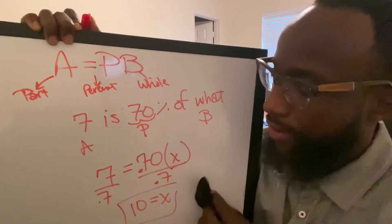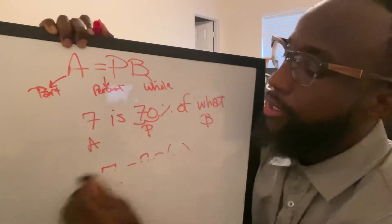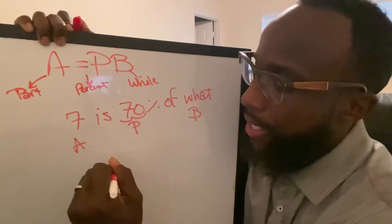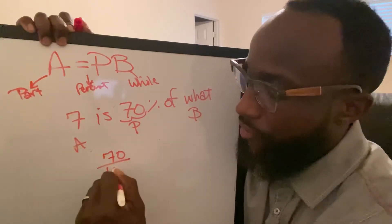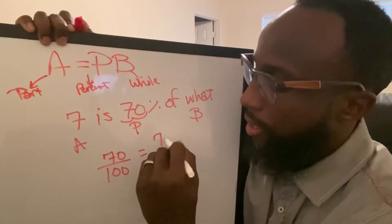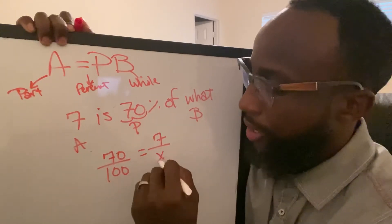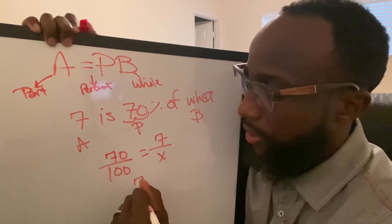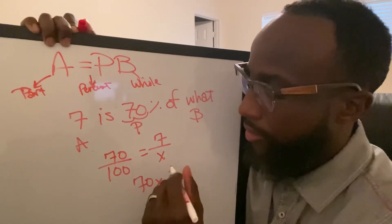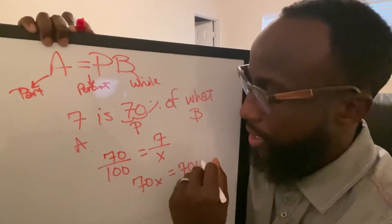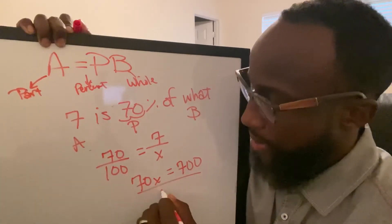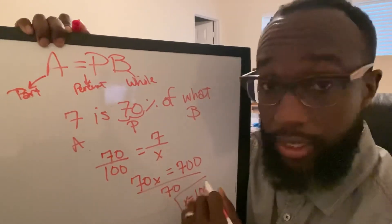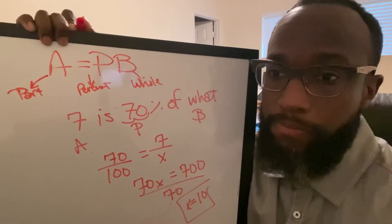Let's look at it as a proportion. This time I'm going to leave the equation up so we can see it. 70%, that's 70 over 100, equals that piece over the whole number. Let's cross multiply. It's going to be 70X equals 7 times 100 is 700. Divide by 70, it's equal to 10.